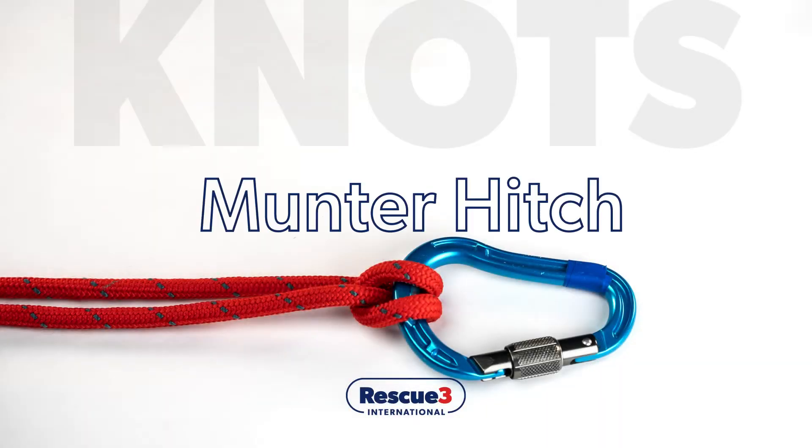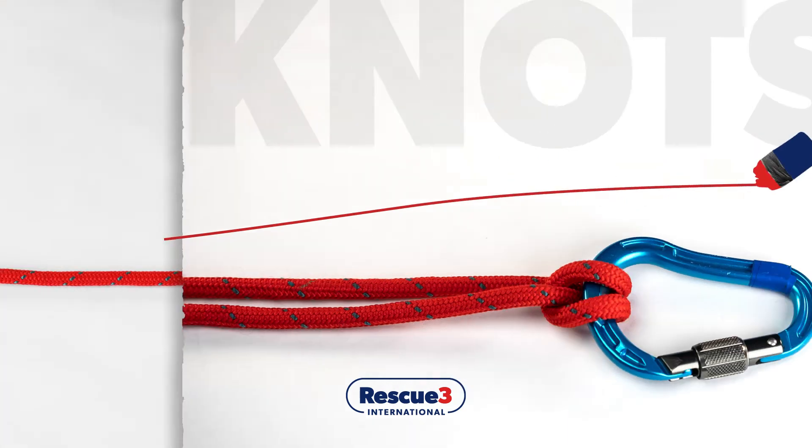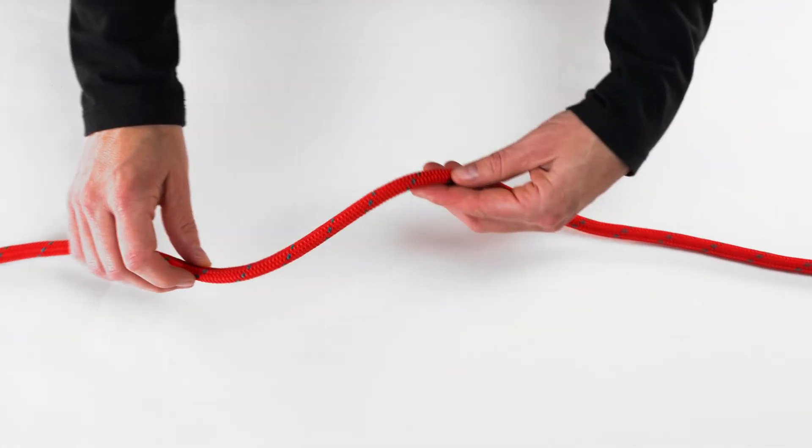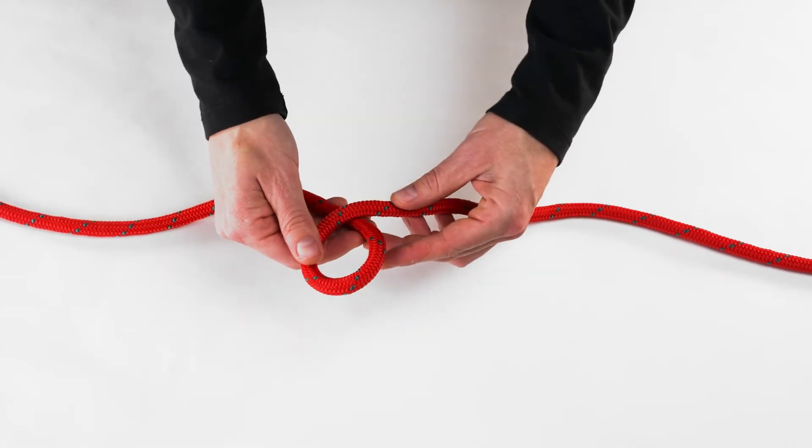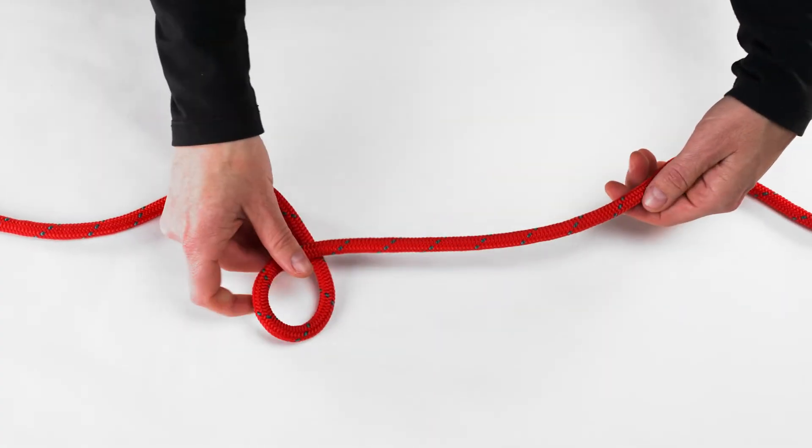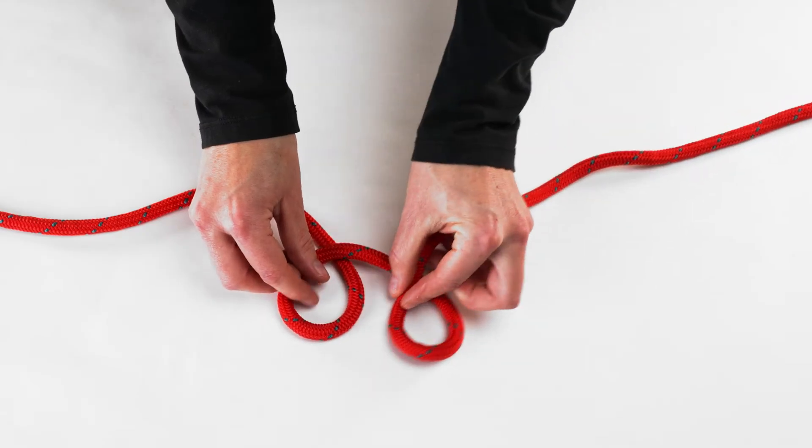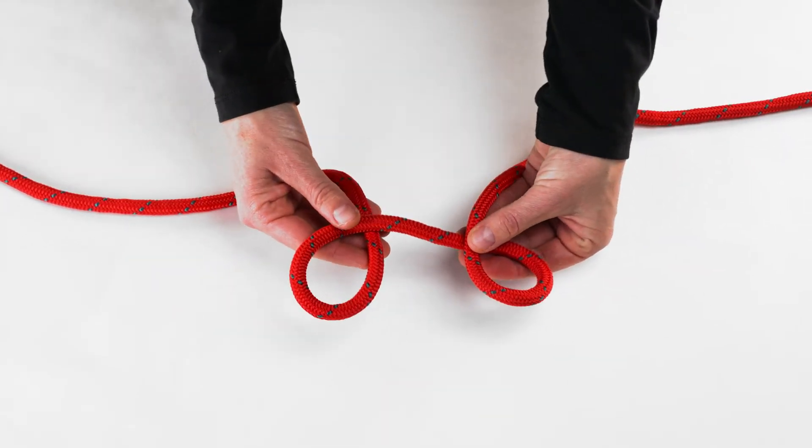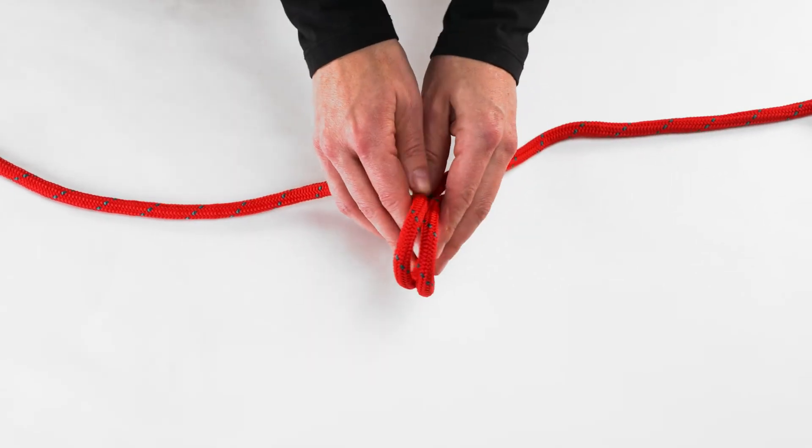Munter hitch. To tie the munter hitch, hold the rope in both hands and form a loop by crossing the working end over the standing end. Then form a second loop in the same way. Now, fold the two loops toward each other like you are closing a book.